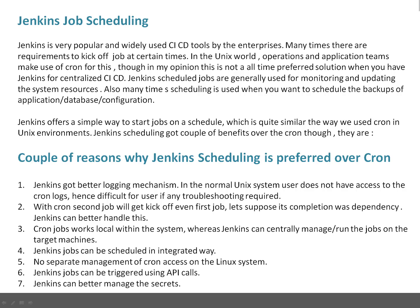With cron, a second job will get kicked off even if the first job has failed. For example, if you configure two jobs in Unix cron — one to start at 3 o'clock and one at 3:10 — the second will automatically trigger regardless. But in Jenkins, you can create dependencies: you can say 'if this job completes, then only trigger the next job.' That's another benefit of using Jenkins over cron.